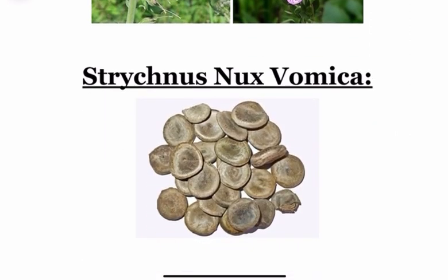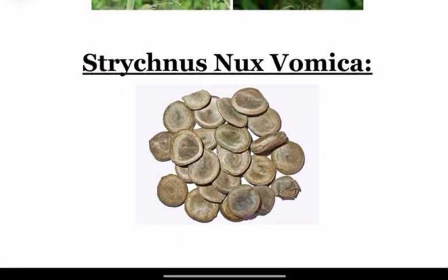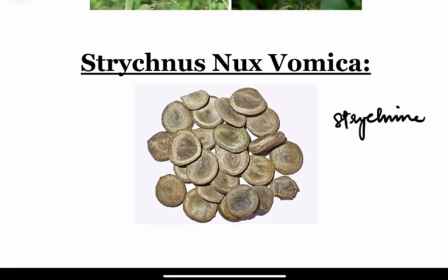Next is a spinal poison — Strychnos Nux Vomica, also called as Coachella Seed, Dog Buttons, or Quaker's Buttons. One crushed seed can be fatal. The active principle is Strychnine, Brucine, or Loganin. It inhibits glycine in the anterior horn cells, which causes excitation of the spinal cord, muscle convulsions, and it resembles tetanus.